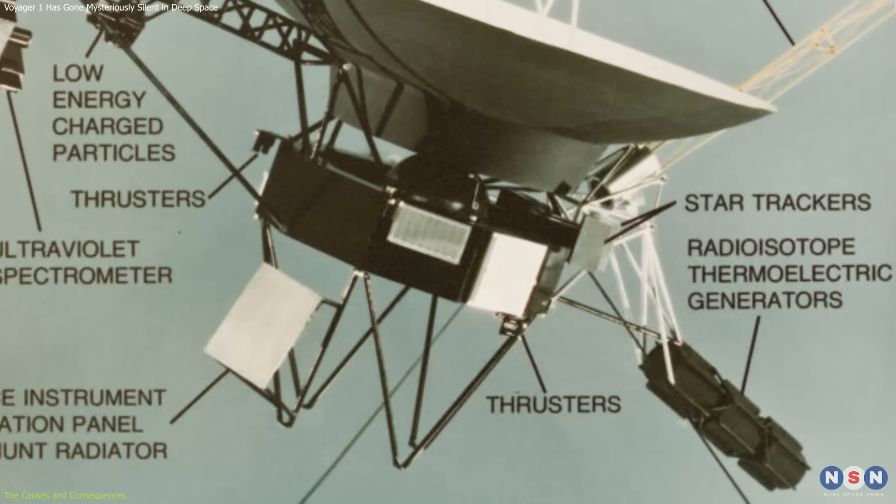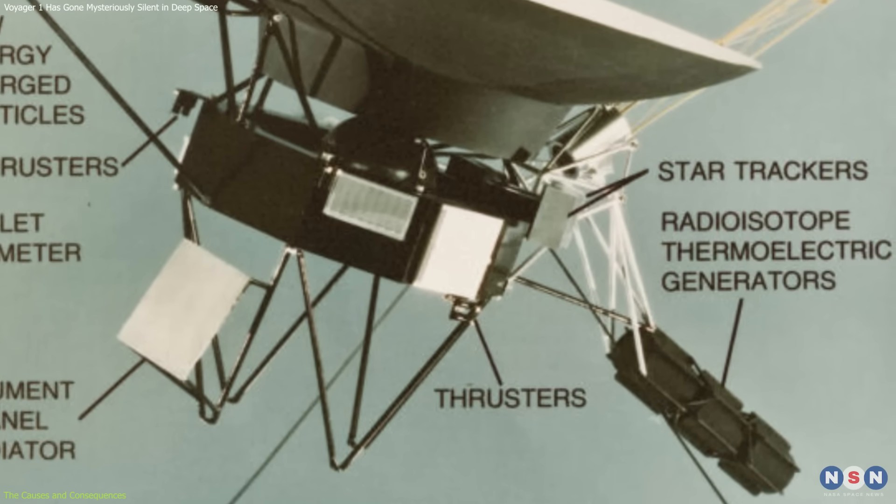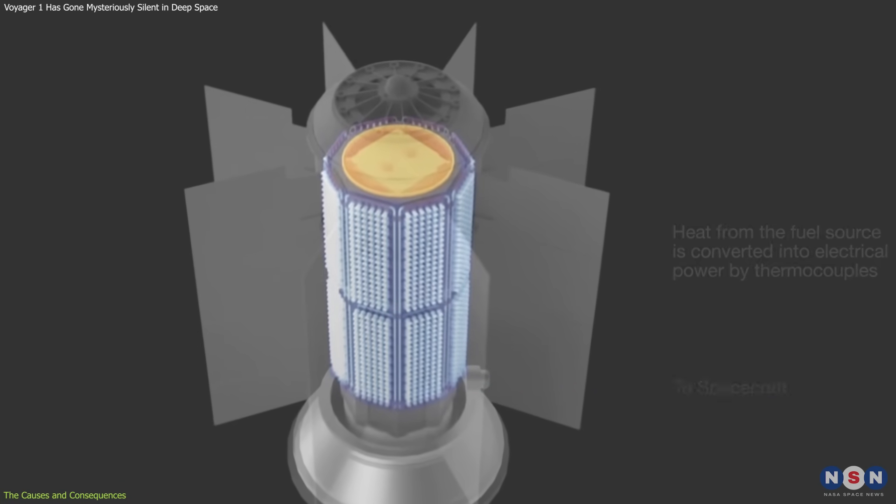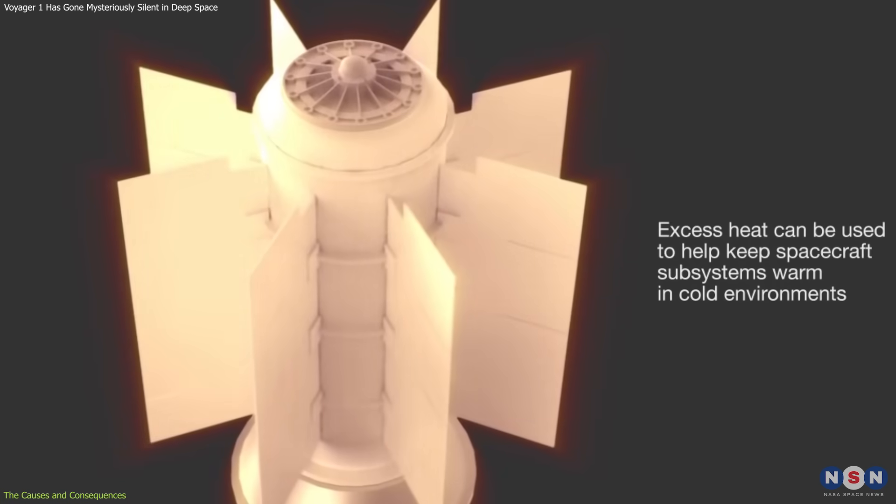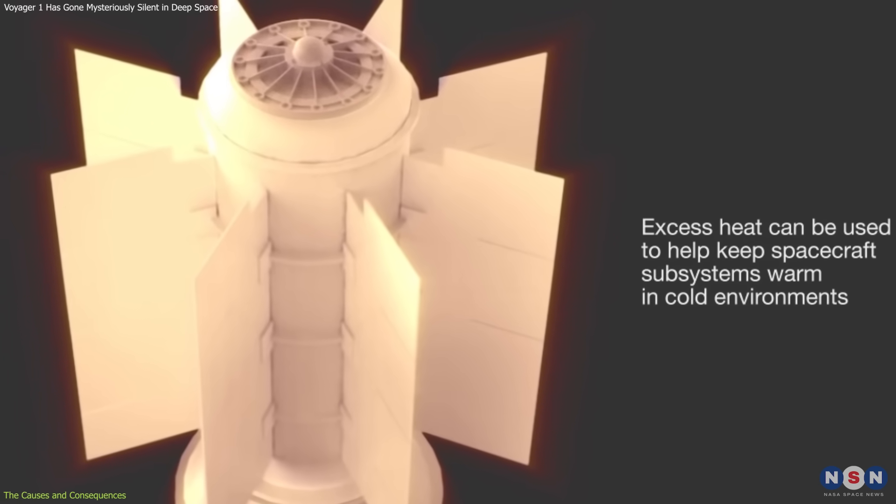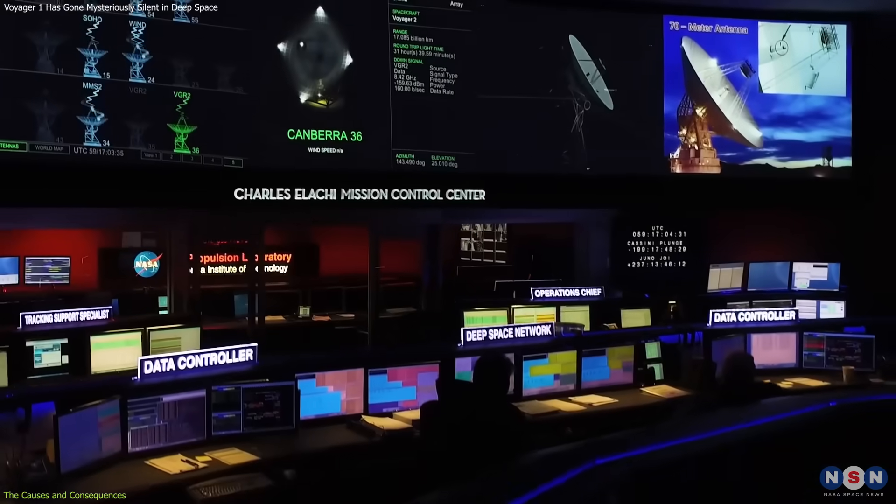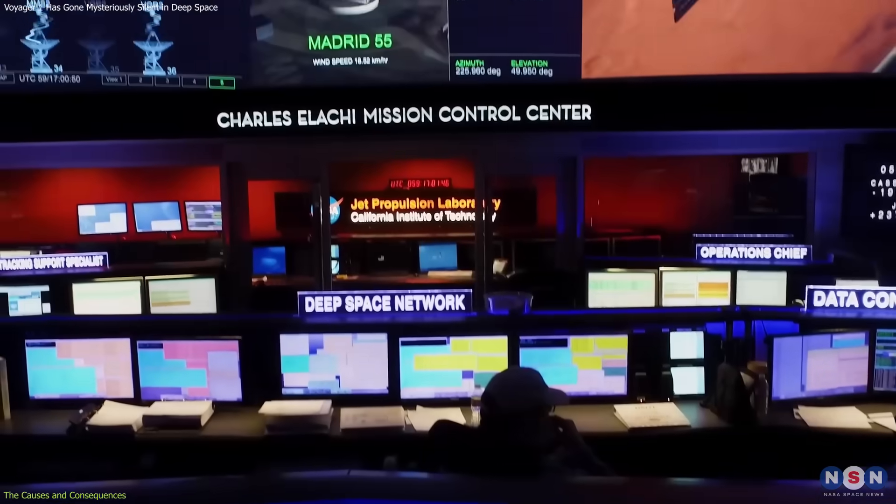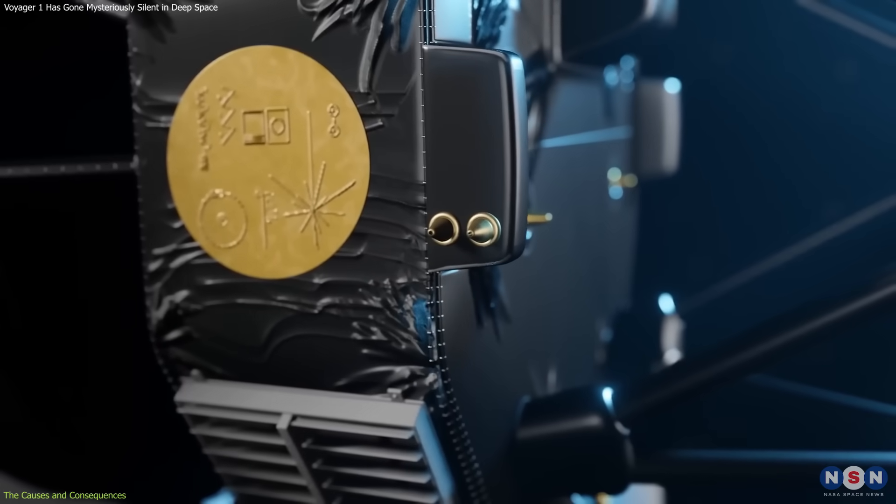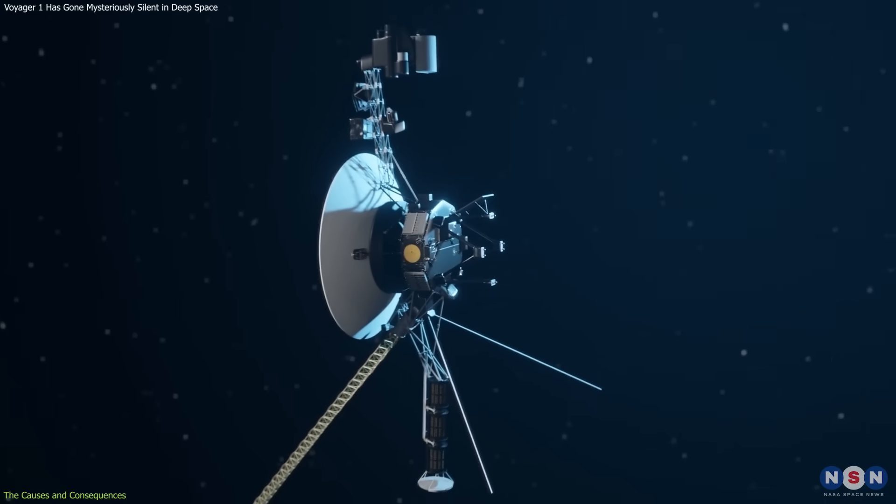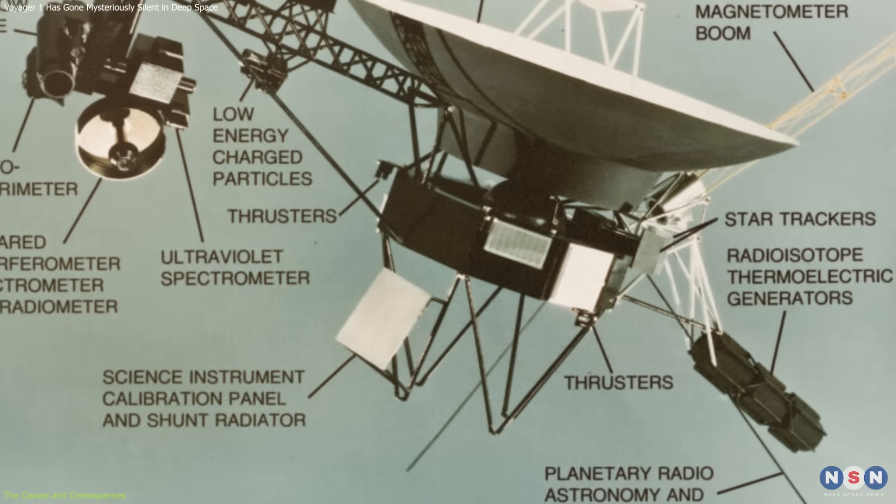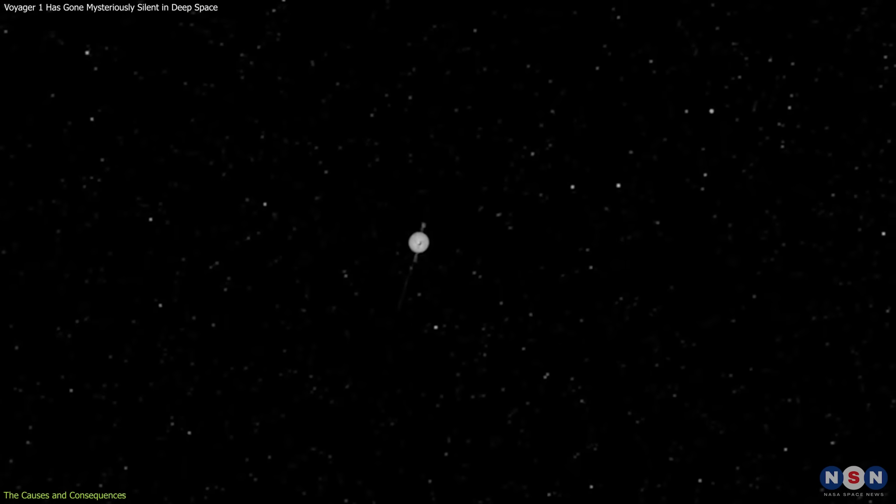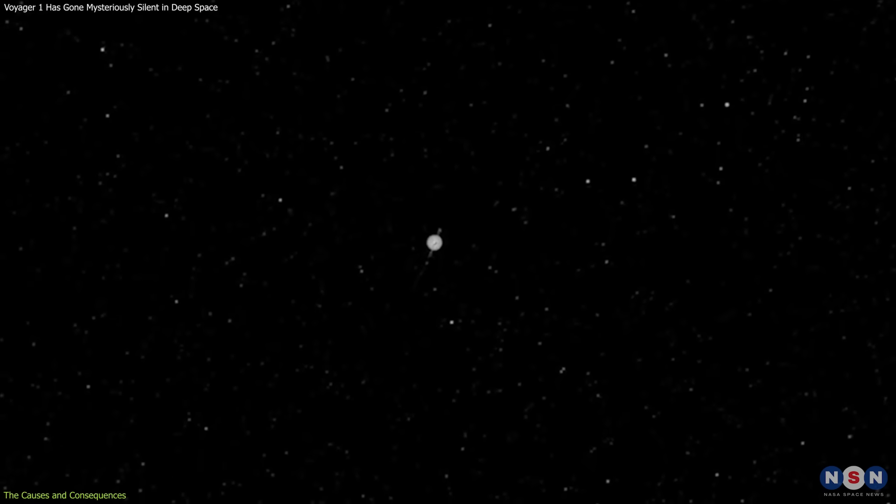For example, its power source, a radioisotope thermoelectric generator which converts heat from the decay of plutonium-238 into electricity, has been gradually losing power over time. The mission team has been implementing various strategies to extend the spacecraft's lifetime, such as turning off some of the instruments and heaters and adjusting the power distribution. However, the RTG is expected to run out of power by 2025, which means that Voyager 1 will eventually go silent.